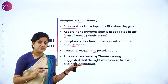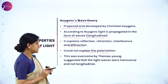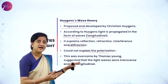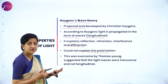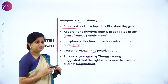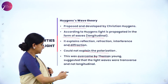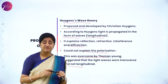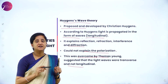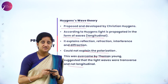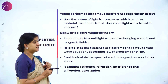Polarization is also a property of light, but Christian Huygens' wave theory could not explain it. This drawback was overcome by Thomas Young, who suggested that light waves were transverse, not longitudinal. If light were longitudinal waves it must also explain polarization. Thomas Young demonstrated an experiment showing that light waves are transverse, and he performed this famous interference experiment in the year 1801.